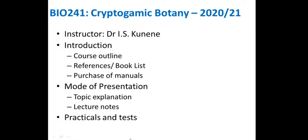Welcome to Bio 241, which is Cryptogamic Botany. I'm your instructor, Dr. Iskunene. Cryptogamic Botany is the study of those plants whose reproductive structures or gametes cannot be seen easily. 'Crypto' means hidden, 'gamic' means reproductive systems, and 'botany' because we consider all the things we're going to study to be plants — some of them will surprise you.